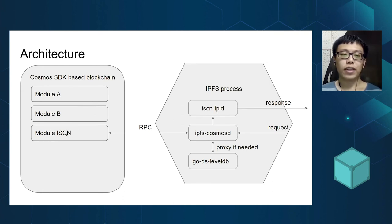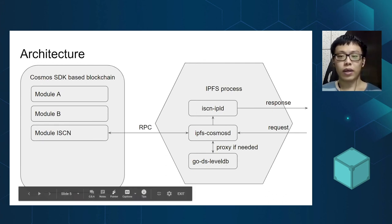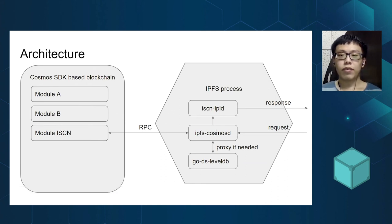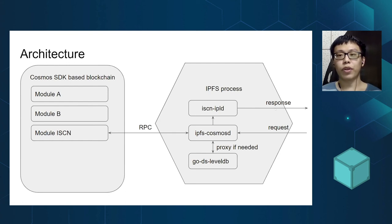If the CID type matches, it calls the specific endpoints defined by the ISCN module to retrieve the raw CID data from the blockchain. If the data is not from Cosmos SDK, the request is simply forwarded to the basic level-db plugin. After that, if it is a local request and the user wants to parse the IPLD data, the CID data will be parsed by the iscn-ipld plugin into a human-readable form, and then the response is given to the user.